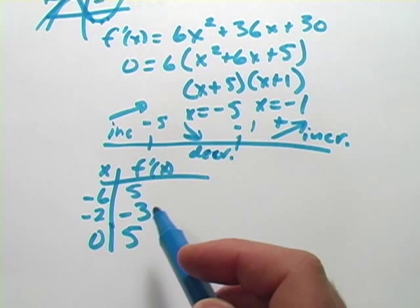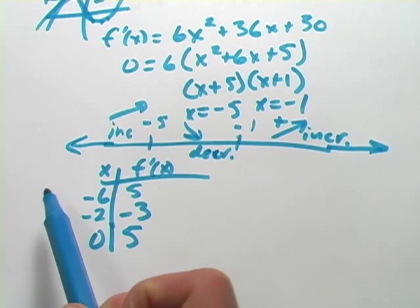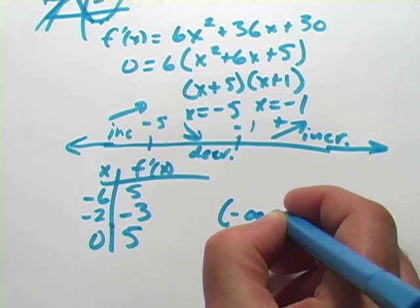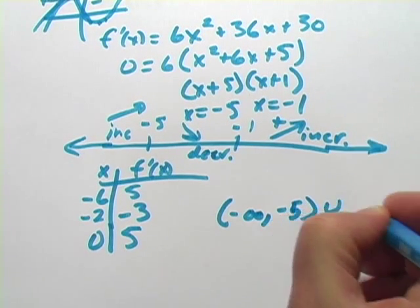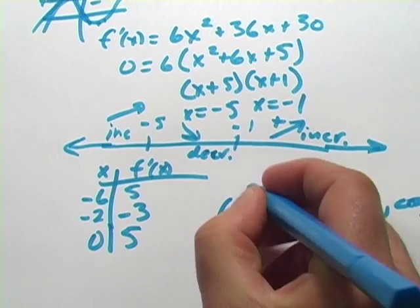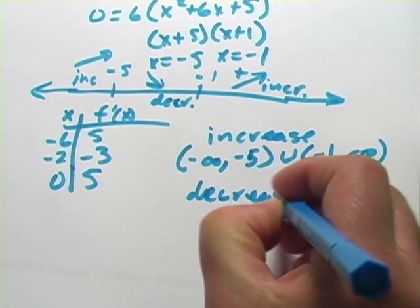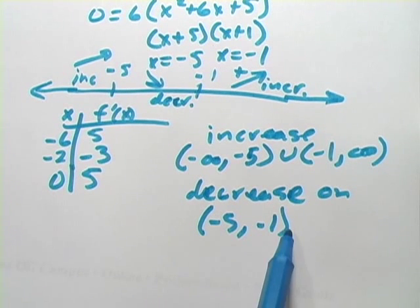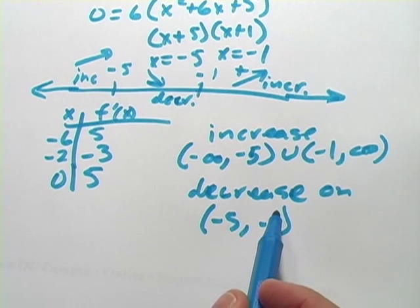And then we would want to write these intervals in interval notation. This is just a nice polynomial function, so it's going to stretch out to infinity. From negative infinity up to negative 5, we have an interval of increase. So from negative infinity to negative 5, union negative 1 up to infinity — those are our intervals of increase. And then it's decreasing on the interval from negative 5 to negative 1. I use round parentheses because none of these points are included — that actual point is where the function is neither increasing nor decreasing, where the slope of the tangent line is 0.